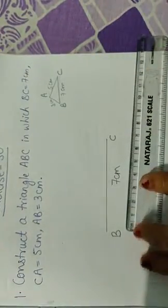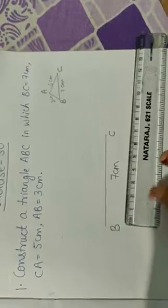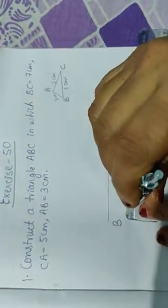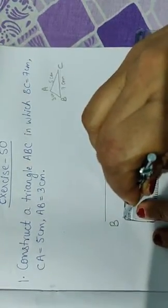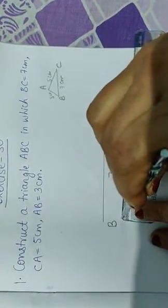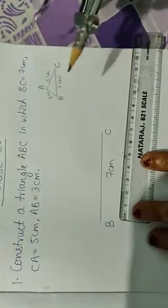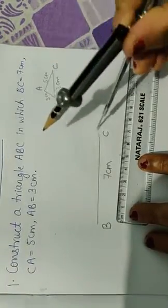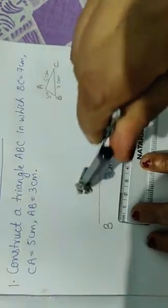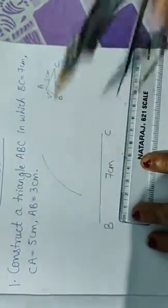Now take your compass and measure 5 centimeter from the ruler. And then put it at C because as you can see in the picture our CA is 5 centimeter. So put it at C and draw an arc of 5 centimeter.